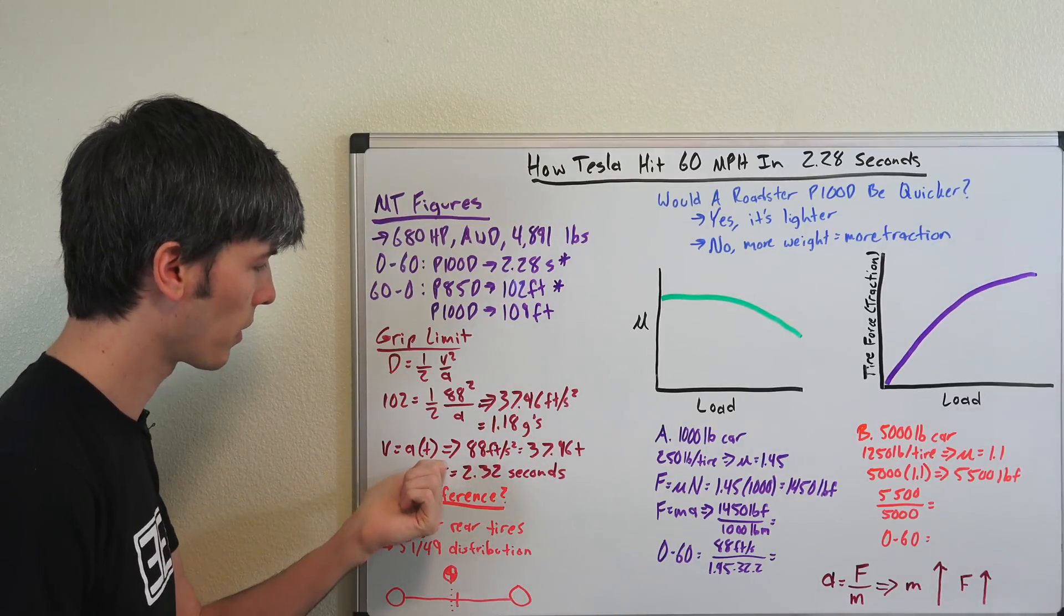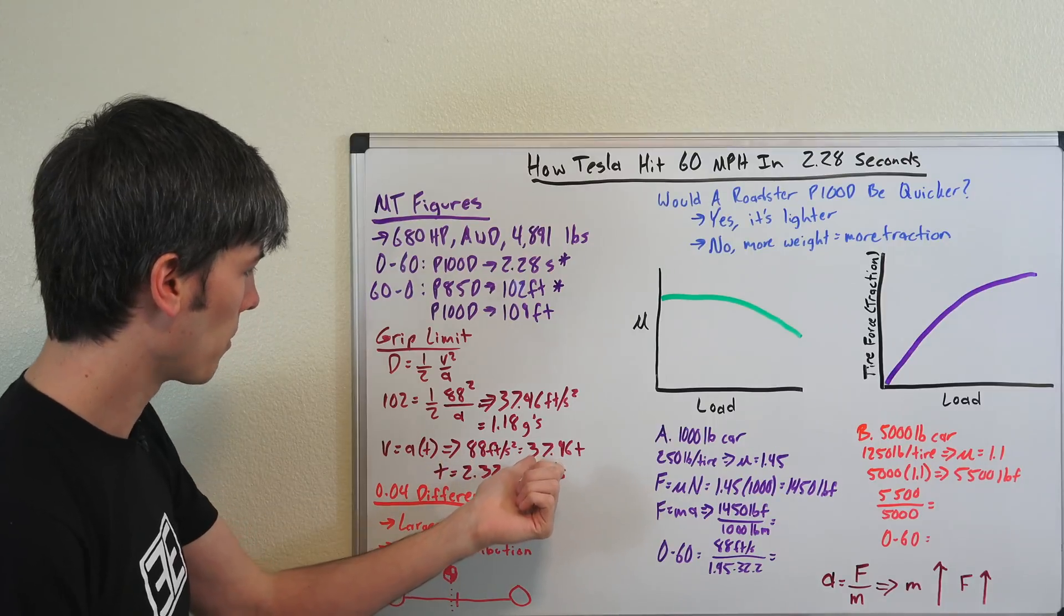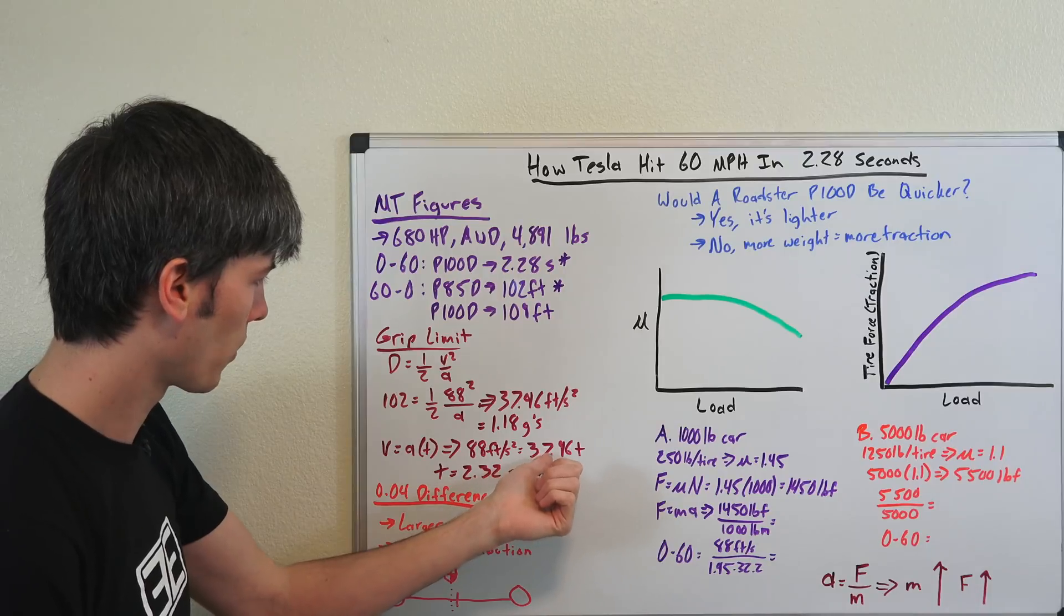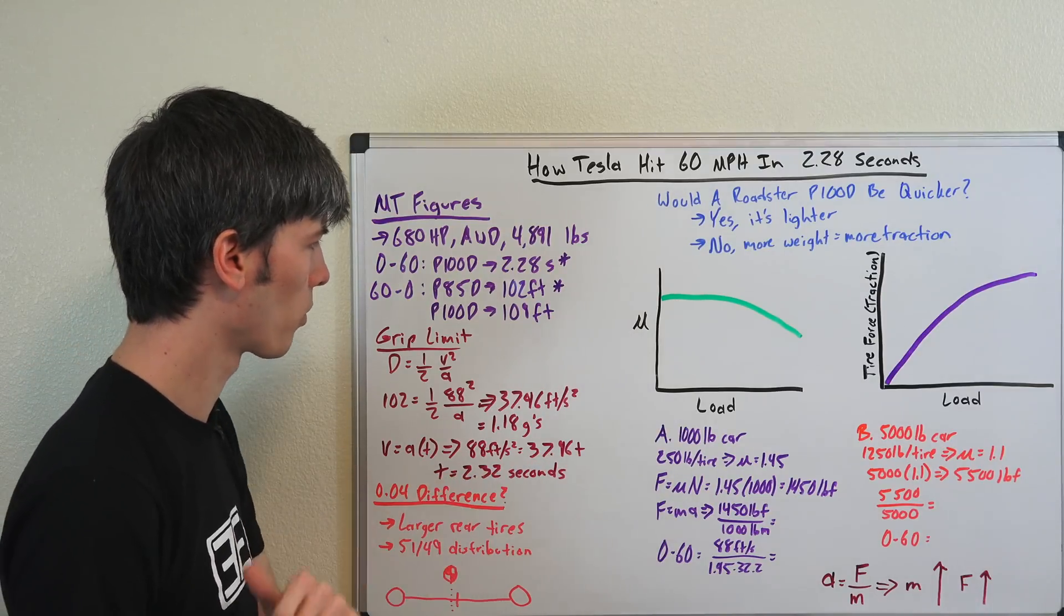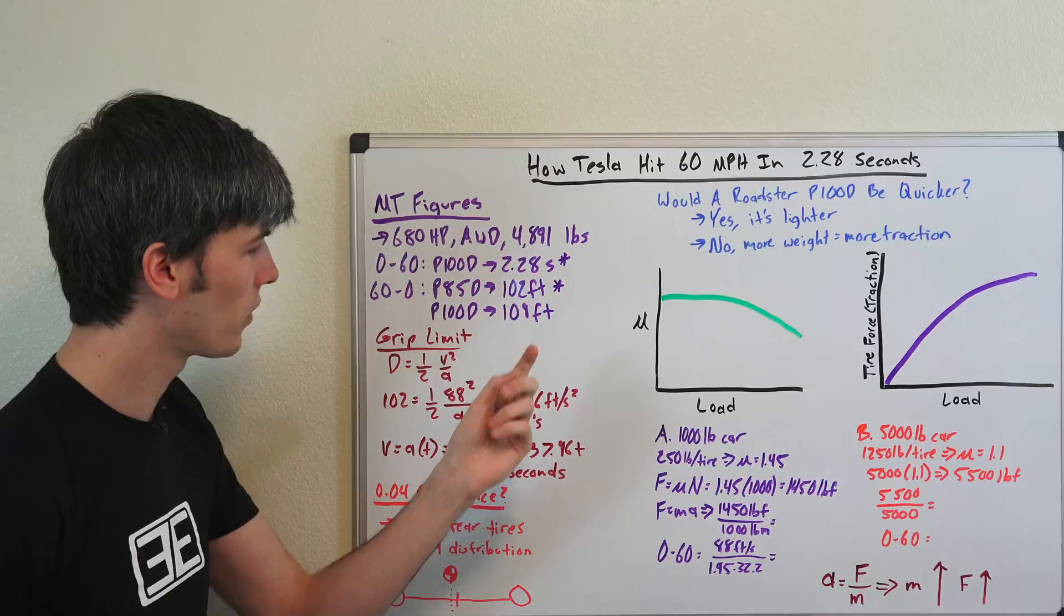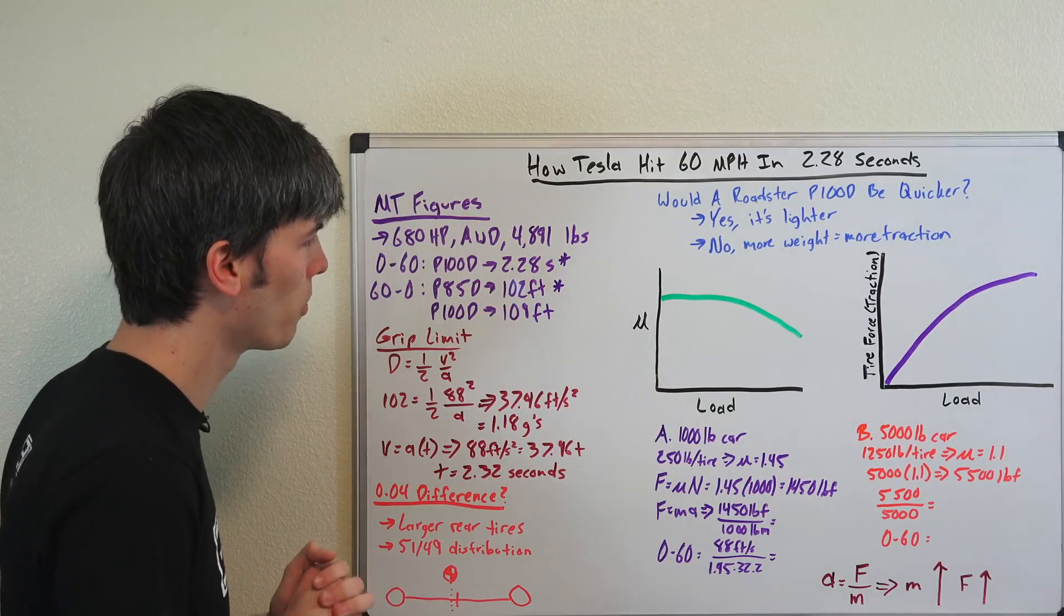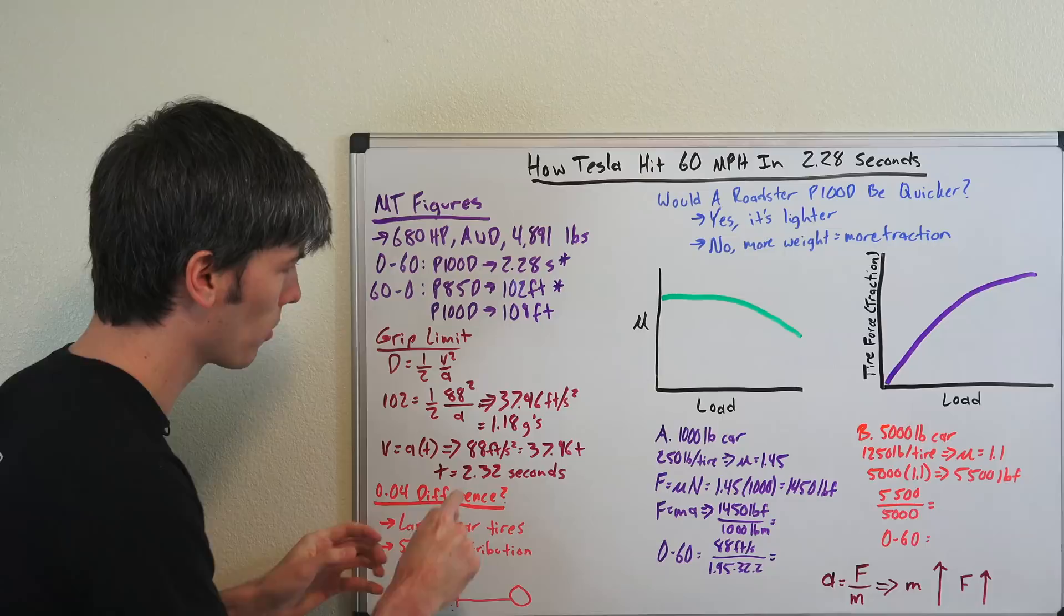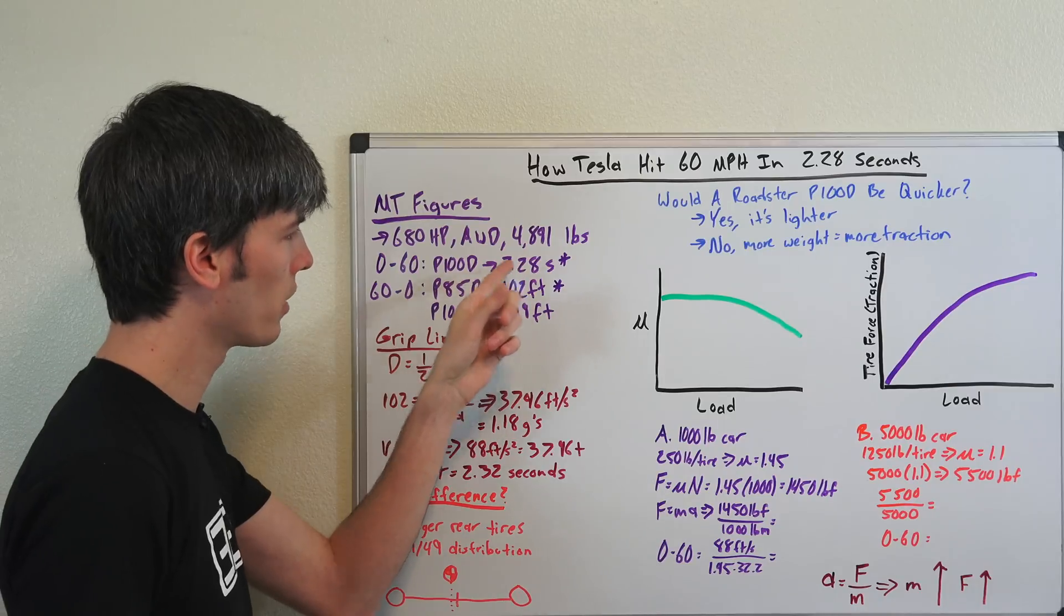So velocity equals acceleration times time. We take 88 feet per second divide that by 37.96, that gives us a 0 to 60 of 2.32 seconds. 2.32 seconds as you will notice is very close to Motor Trend's 2.28 seconds. So I'm saying theoretical limit based on braking is 2.32. They actually beat that with a 2.28.